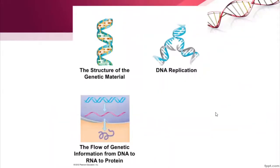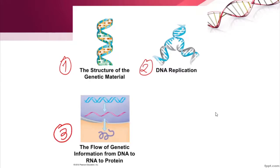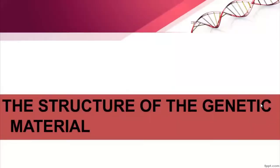So in this lecture, this will be our general outline of topics or the big ideas. First, we will discuss the structure of the genetic material. Next, we will discuss the process of DNA replication. These two topics will be covered in my lecture. And then last, we have the main topic on the flow of genetic information from DNA to RNA — this is the transcription process — and then RNA to protein, which is the translation process. Big idea number three will be discussed by Sir Patrick.